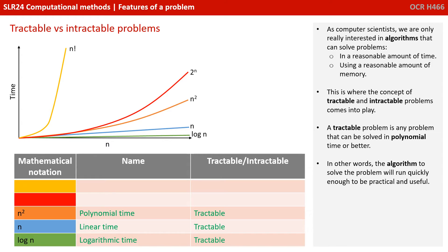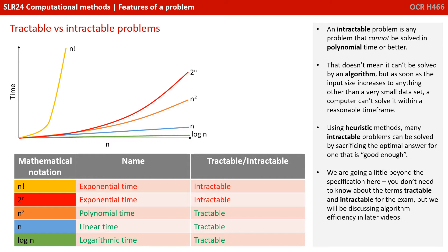A tractable problem is any problem that can be solved in polynomial time or better. In other words, the algorithm to solve the problem will run quickly enough to be practical and useful. An intractable problem, on the other hand, is any problem that cannot be solved in polynomial time or better.